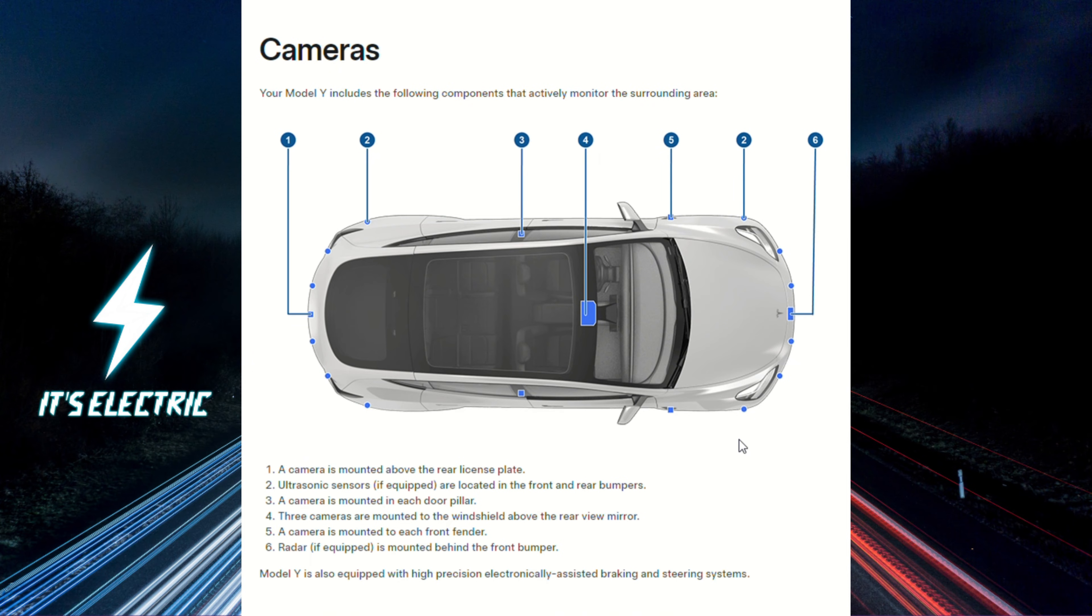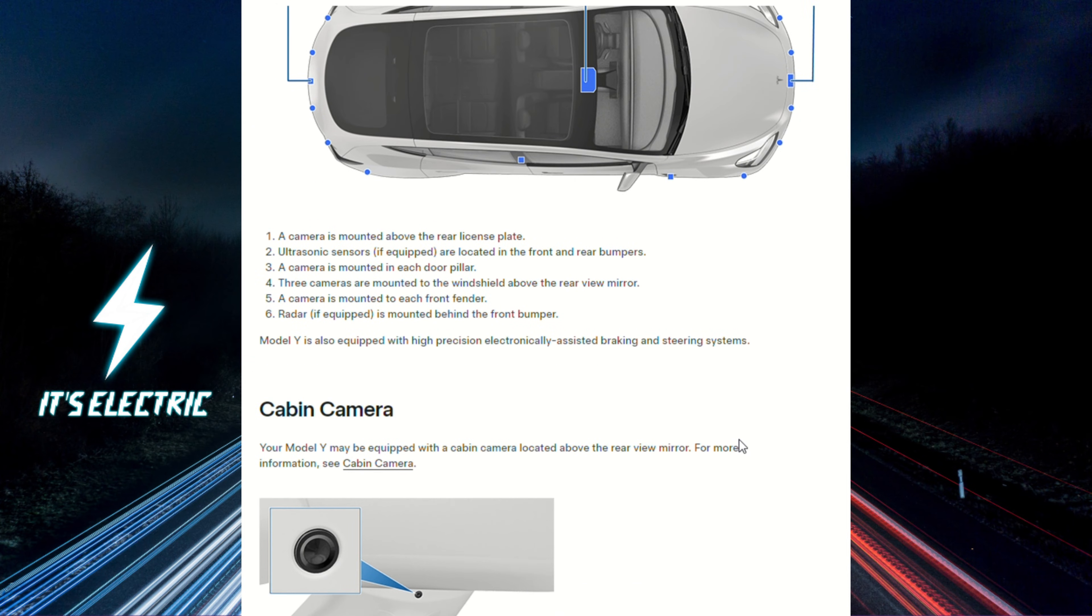Tesla Model Y is also equipped with high-precision electronically-assisted braking and steering systems. It may also be equipped with a cabin camera located above the rearview mirror.